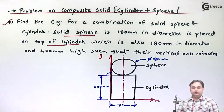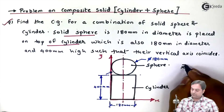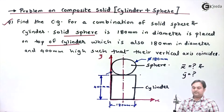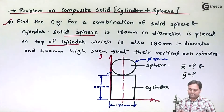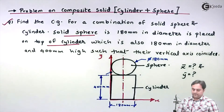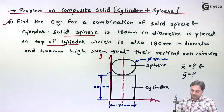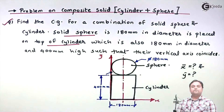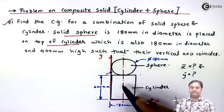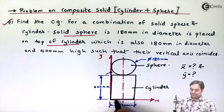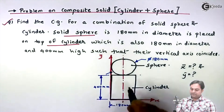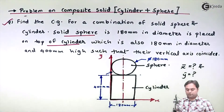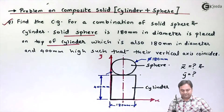We need to find the CG — that means location X̄ and Ȳ. As we can see from the diagram, this composite solid is symmetric about the Y axis. Whenever it is symmetric about the Y axis, the CG will lie on the Y axis. So X̄ will be half of 180 mm, which we can read directly from the diagram.